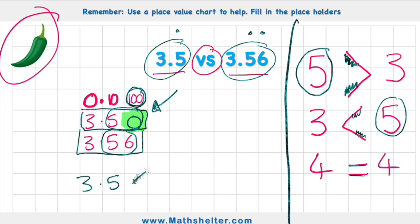So I would write my answer like this. 3.5 is smaller than 3.56. Get myself a tick. And you can see I used the less than symbol.